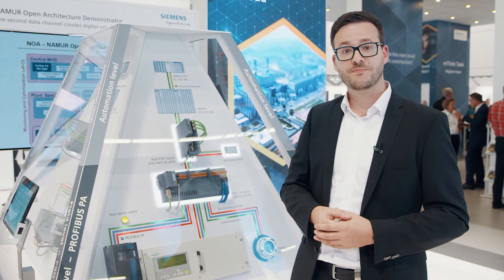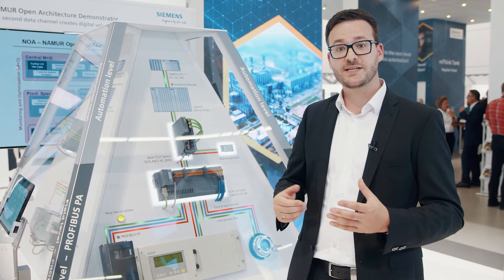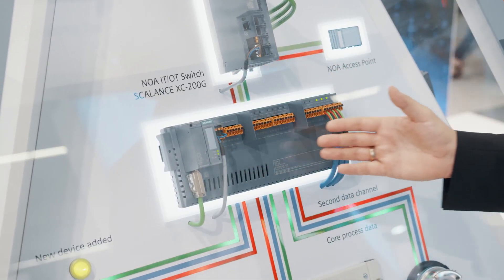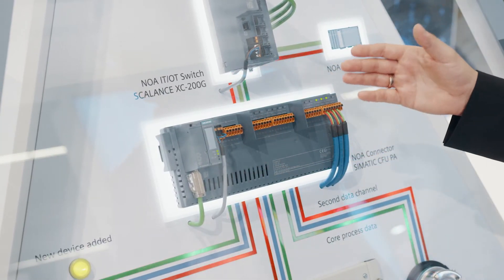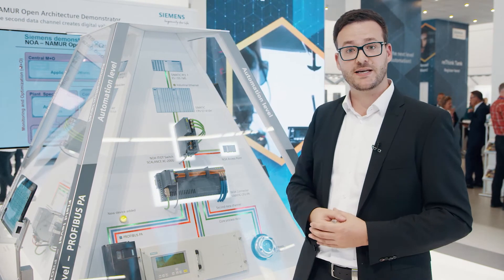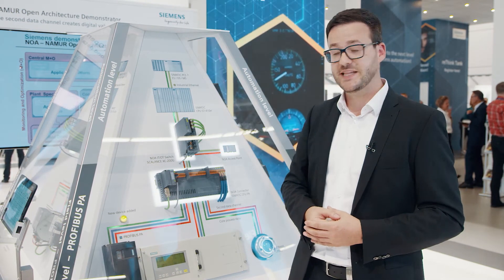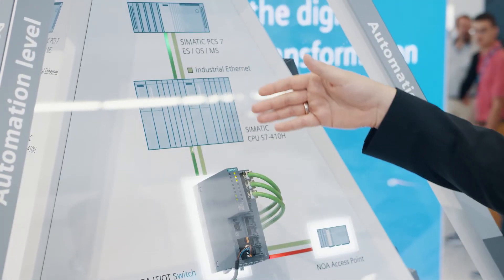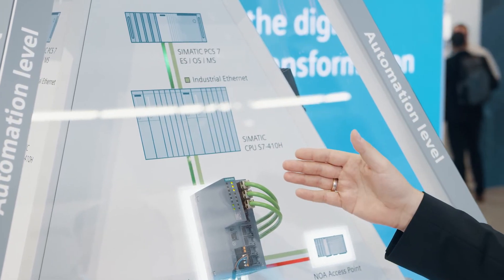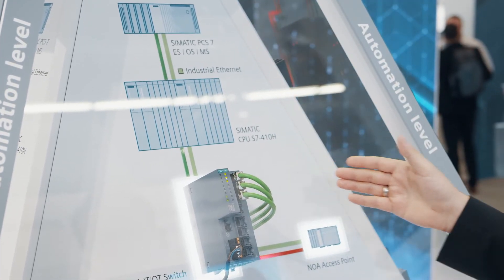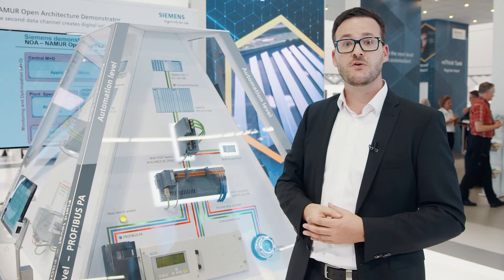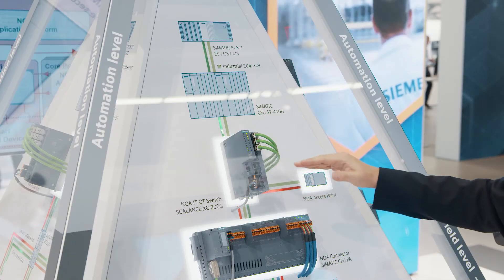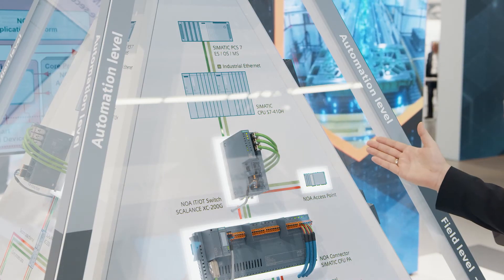Here is one example of how this works. An enhanced version of our compact field unit enables easy access to the NOAA data of the field devices. The Scalant switch XC200G then decouples the data for core automation, here in green, from the data that is to be transferred to the outside via the NOAA access point, illustrated by the data marked in red.